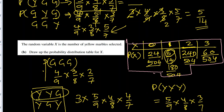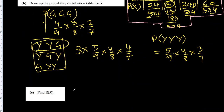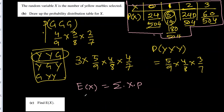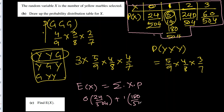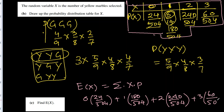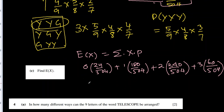Find the expected value of X. Expected value is sigma of x times P(x). We multiply each x by its probability and sum: 0 times 24/504, plus 1 times 180/504, plus 2 times 240/504, plus 3 times 60/504.